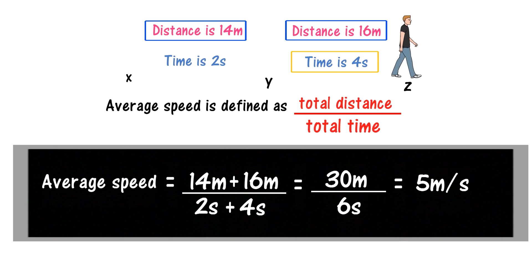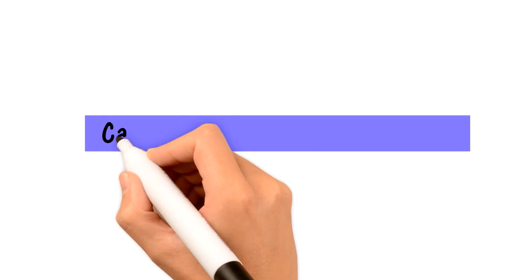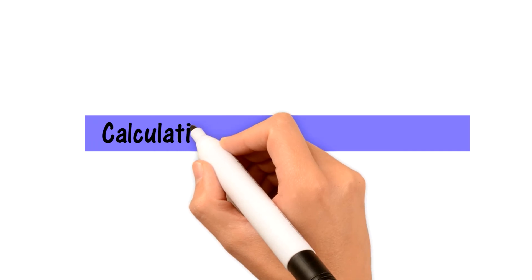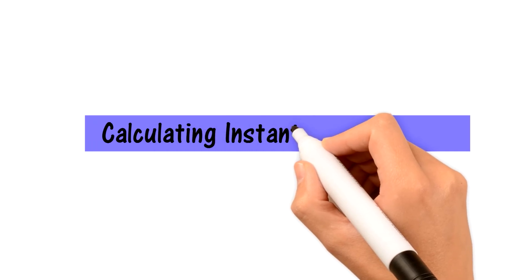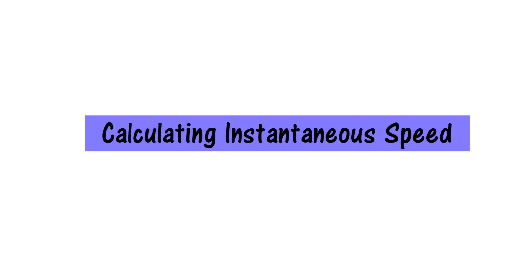Keep in mind that average speed is always different from instantaneous speed. Here the instantaneous speed may be something different, while the average speed is 5 meter per second. Now how do we calculate the instantaneous speed?